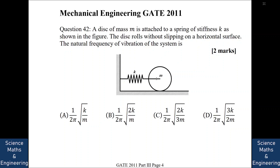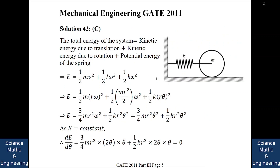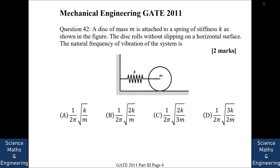A disk of mass M is attached to a spring of stiffness K. The disk rolls without slipping on a horizontal surface. We need to find the natural frequency of vibration of the system. The answer is 1/(2π) × √(2K/3M).